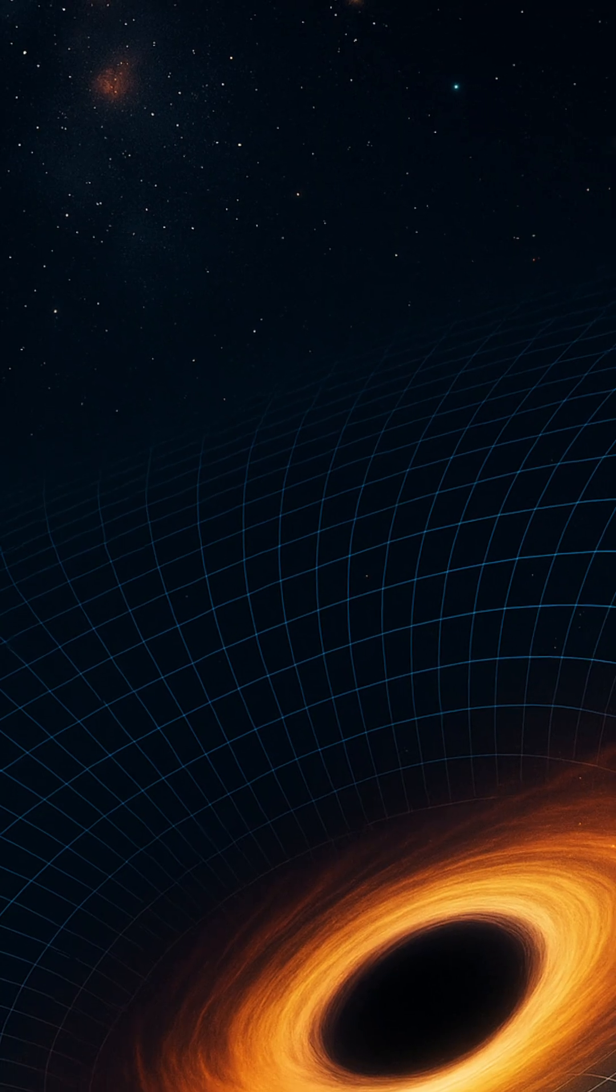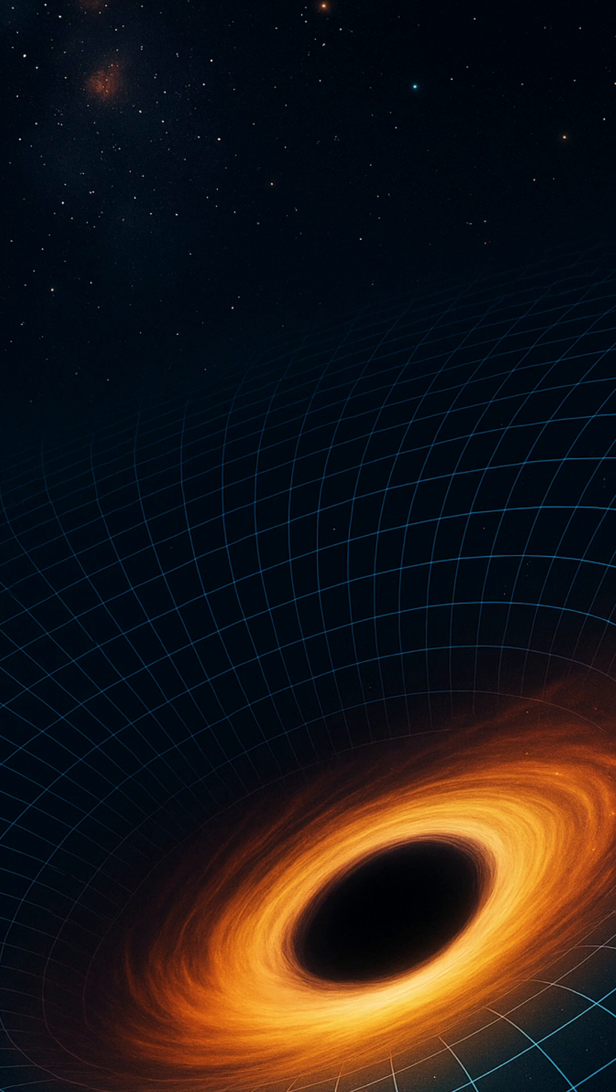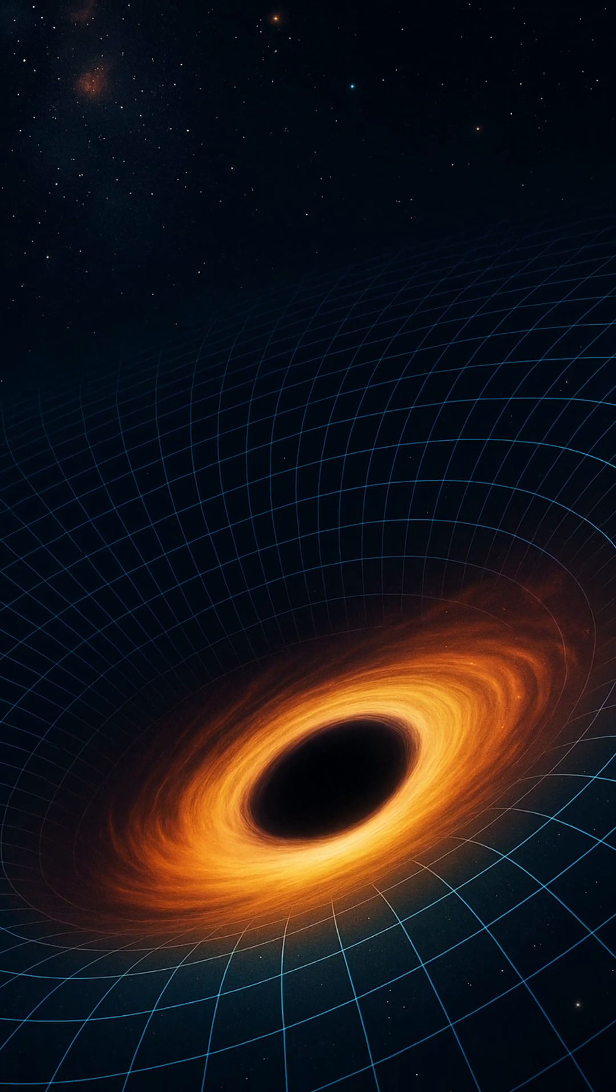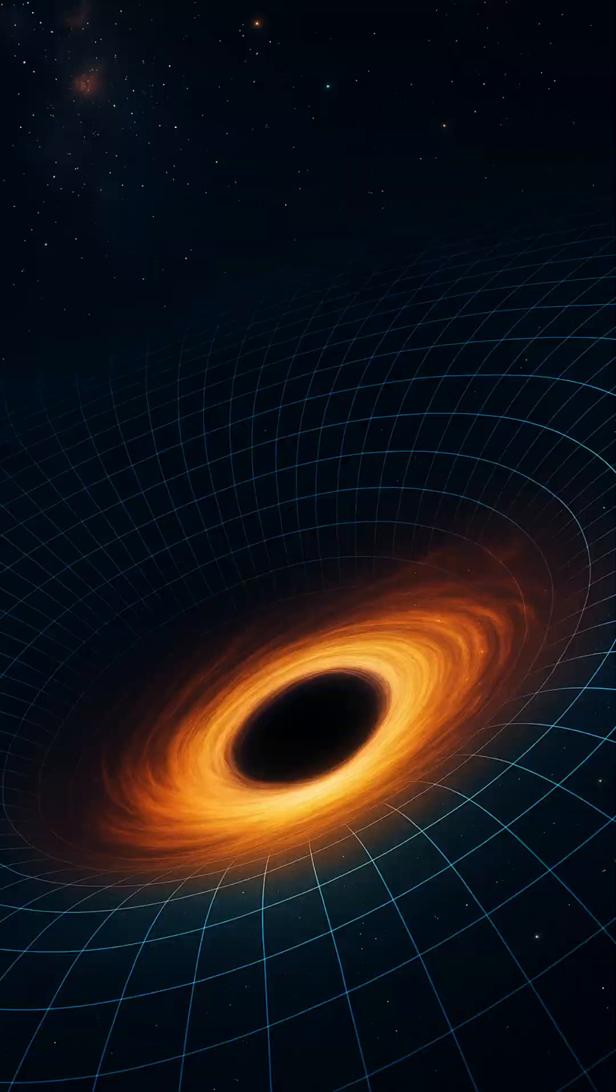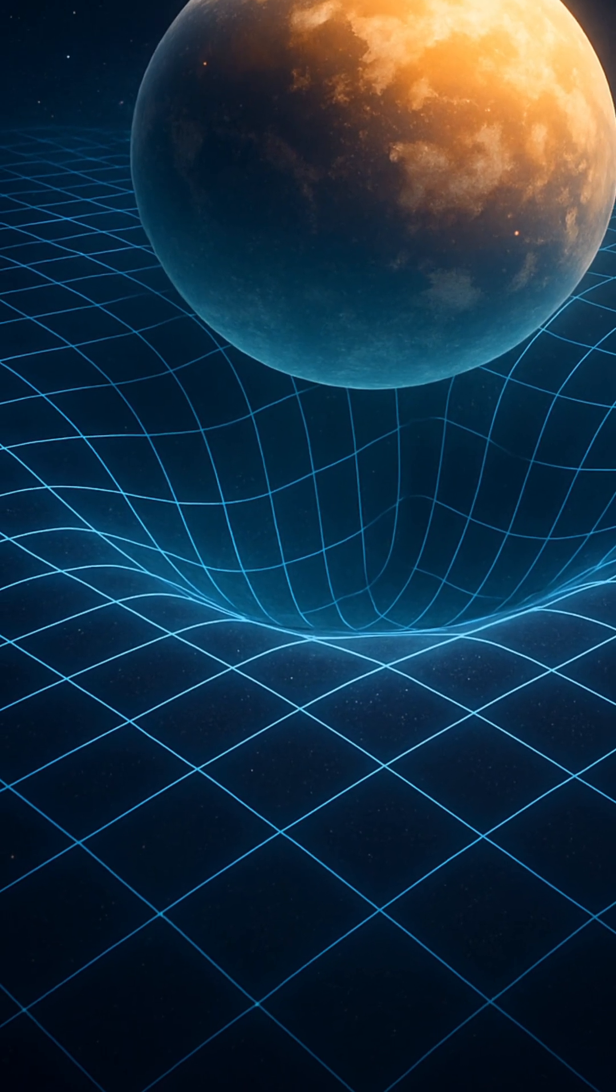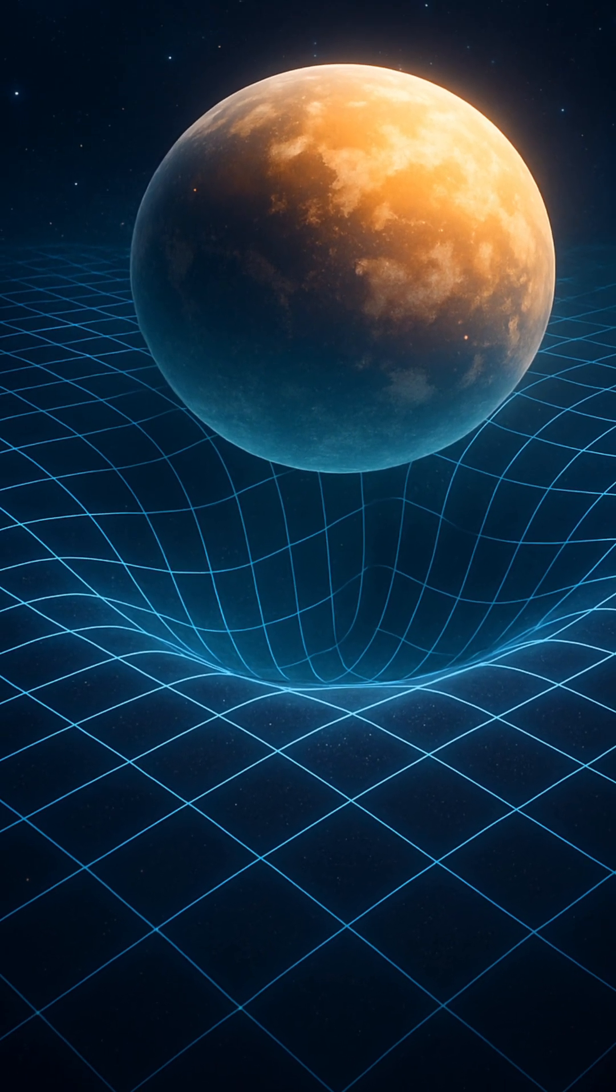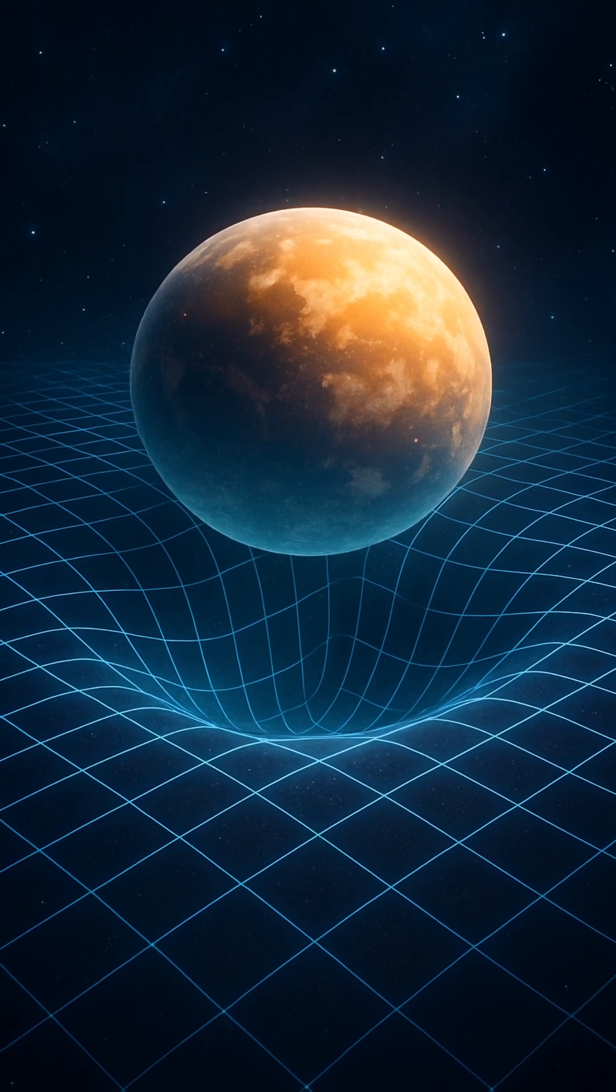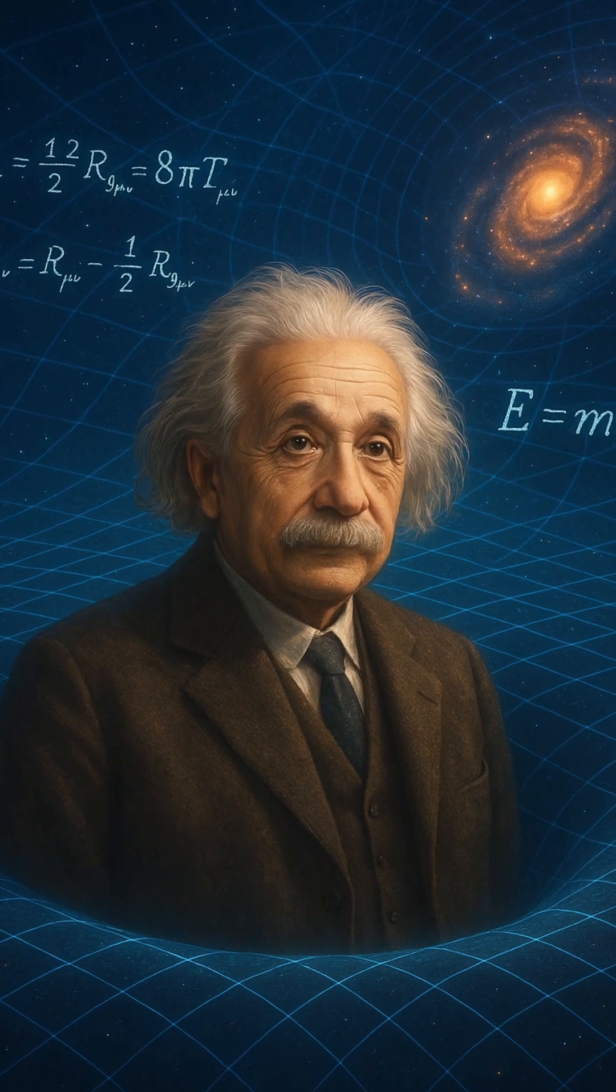This bending of space-time is not just theory. We can see its fingerprints. One stunning example is gravitational lensing. When light from a distant galaxy passes near a massive object, like a cluster of galaxies, the light's path bends. To us, the image of the background galaxy appears distorted or even duplicated. It's like looking at the universe through a cosmic magnifying glass.